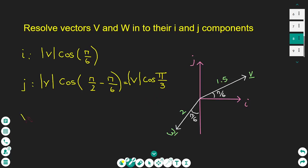I can write the vector V as: the magnitude 1.5 times the cosine of π/6 — and the cosine of π/6 is √3/2 — for the i-component, plus the magnitude 1.5 times the cosine of π/3 for the j-component.